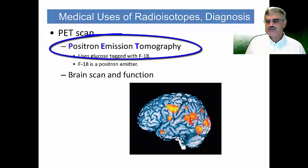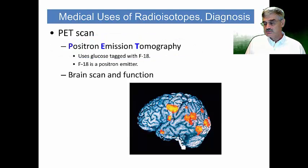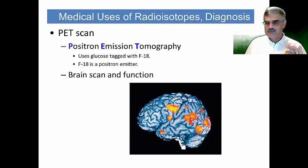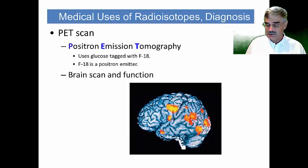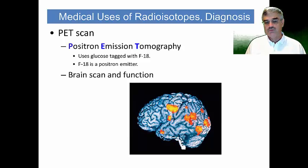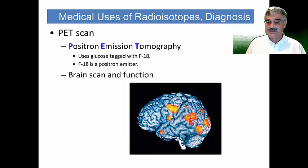Perhaps somebody in your family has had a PET scan. A PET scan works in the following way. Glucose, which is a component of sugar, is labeled or tagged with a particular isotope of fluorine — fluorine-18. Fluorine-18 is what is called a positron emitter; it emits positrons. Our brains metabolize glucose as the preferred energy source. If you give a patient fluorine-18 labeled glucose, this will go to the brain and the positron emission can be measured, giving us a scan of the brain and the active regions that are metabolizing that glucose.